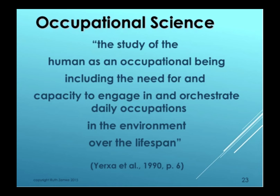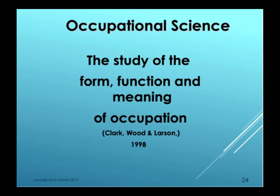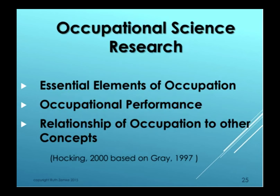Based on that background, we wrote: occupational science is the study of the human as an occupational being — including the need for and capacity to engage in and orchestrate daily occupations in the environment and over the lifespan. Quite a broad background. Occupational science has been also defined as the study of the form, function, and meaning of occupation.